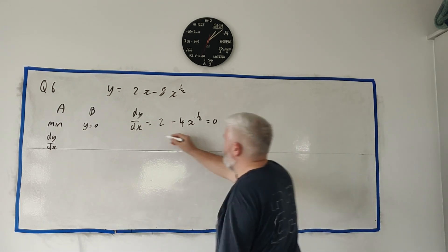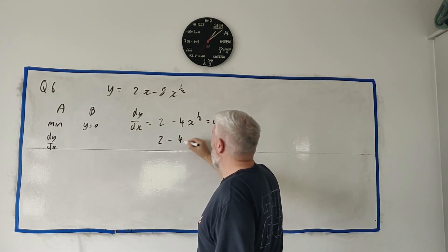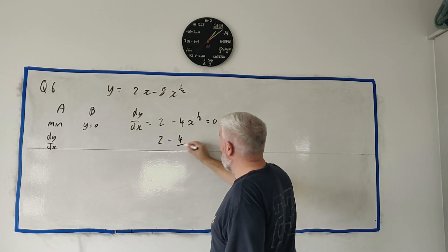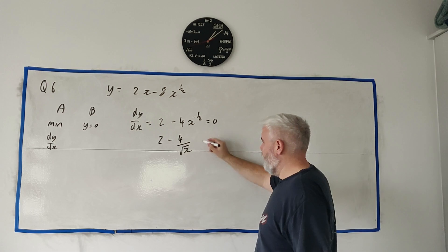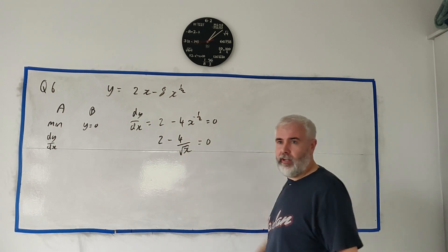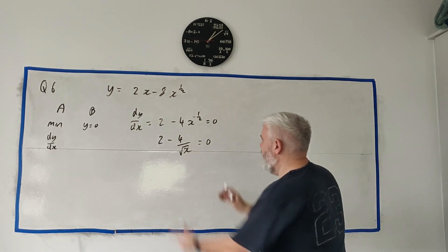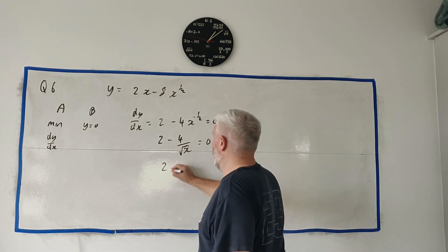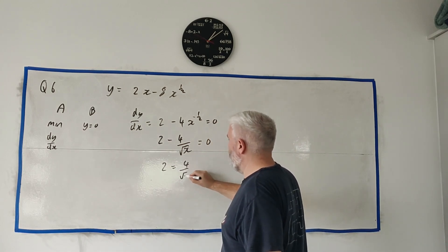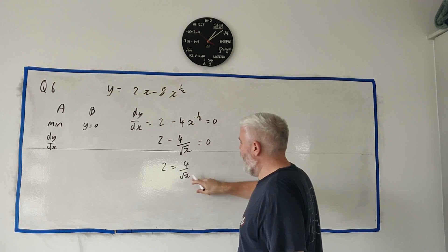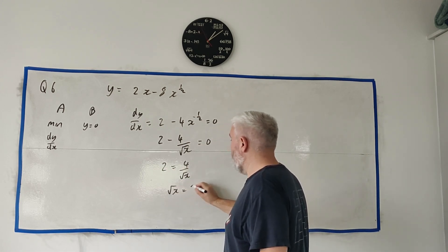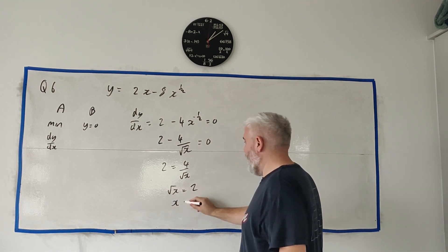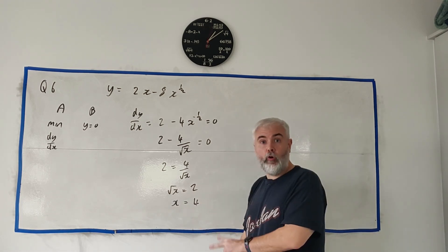dy/dx of this is the derivative of 2x is 2. The derivative of this we get a half times the 8 minus 8 is minus 4 and we take 1 away from this. So that's minus a half. And remember this is now equal to 0. So we try and solve this. Let's write it out one more time. 2 minus 4 over the square root of x. Just so everyone knows what we're dealing with here. Let's add that to both sides. So we get 2 is equal to 4 over square root of x. Multiply up, divide by the 2. We get square root of x is equal to 2. Square both sides we get x is equal to 4.